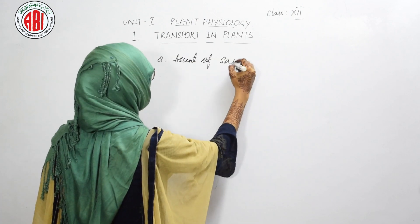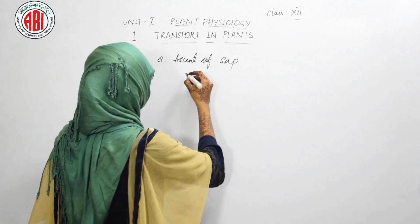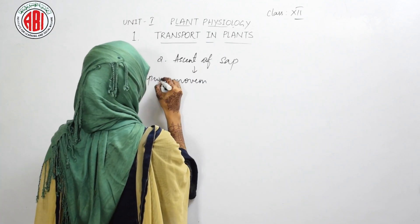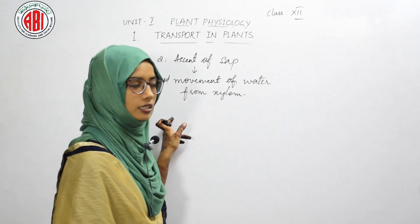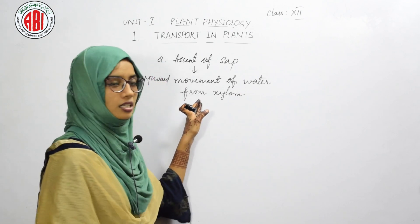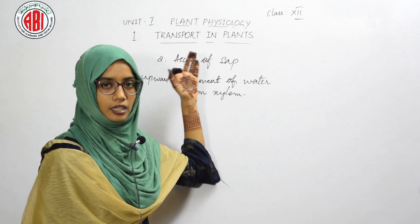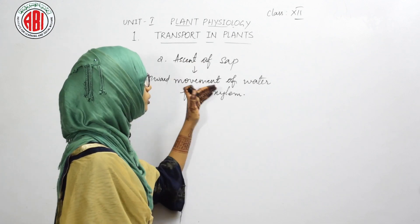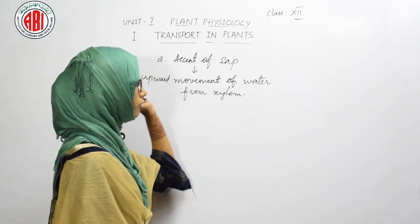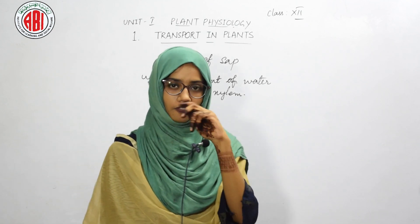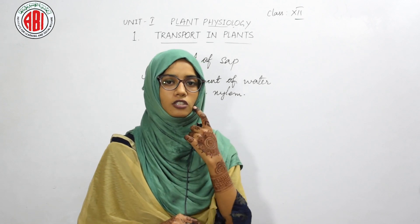In today's class I am going to discuss the second step, ascent of sap. Ascent of sap is nothing but the upward movement of water. When water reaches the xylem vessels through the root hairs, it then transports towards the leaves. This upward movement of water from the xylem is termed as ascent of sap.